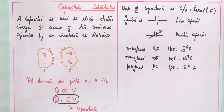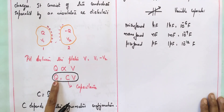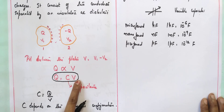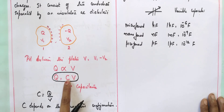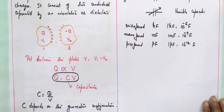A capacitor is a passive device used to store electric charge. For any capacitor, charge is directly proportional to potential difference, expressed as Q equals C times V, where the constant C is called capacitance — the ability of the capacitor to store electric charge. As charge increases, potential difference increases, but capacitance remains constant. That concludes the introduction to capacitors.